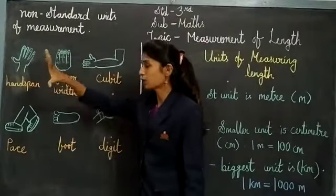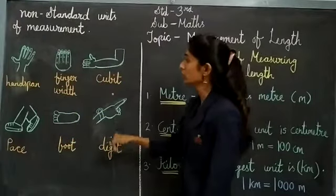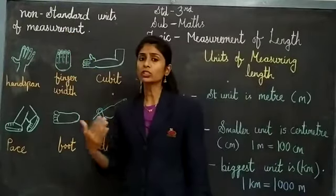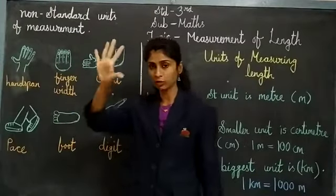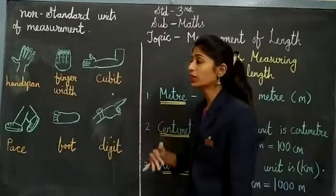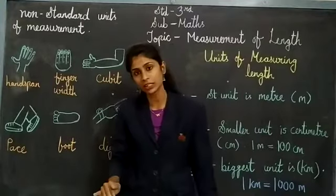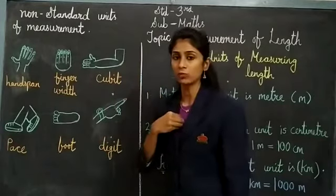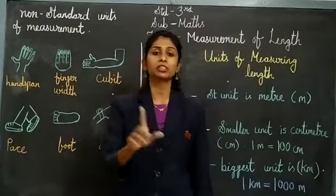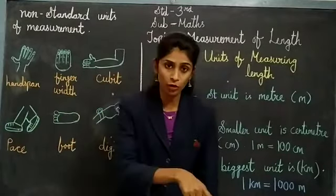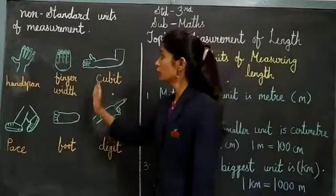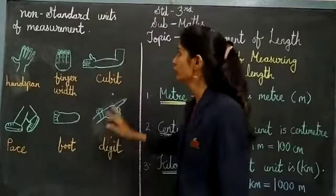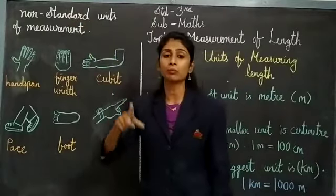You also have these body parts — handspan, finger width, cubit. Now the question is why I am saying it is non-standard measurement. Suppose I am taking some object's measurement with my hand. But you are smaller than me, so your fingers will be smaller than mine, meaning your measurement will be different. If I am taking that measurement with my body parts, it will come bigger, but if a small child takes it with their body parts, their measurement will come different. So the measurement taken by me and the measurement taken by any child will be different. That is why we are calling it non-standard units.